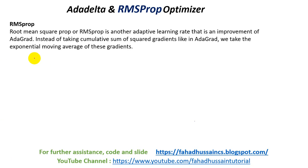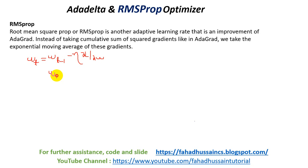First of all, you will remember what we saw in the previous session. It was Wt-1, and then we have the learning rate times the loss function with respect to Wt. Now in this learning rate, we will change a little bit. The new value is alpha divided by the square root of ST. In the previous session it was just the learning rate, so this is a little bit of a change. In the research paper there are different techniques.